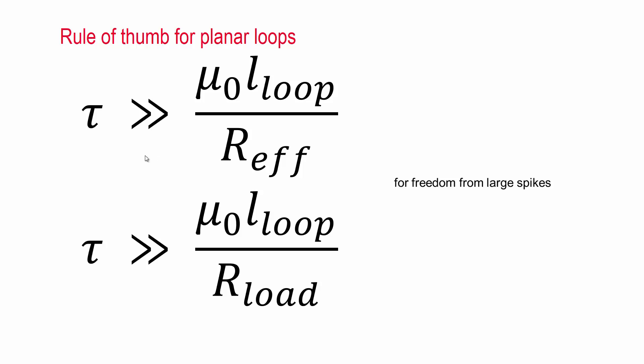So our final rule of thumb is that the rise time must be greater than the permeability of free space, which is about one nanohenry per millimeter, times the loop length in millimeters divided by the R_effective, which is V_off over I_on, for freedom from large spikes.